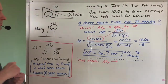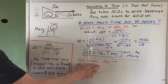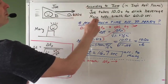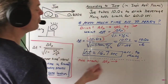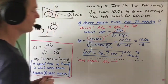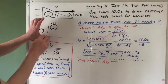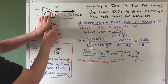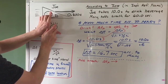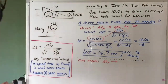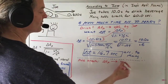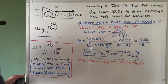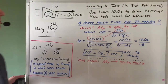Now let's do the other one — the time according to Mary that Mary holds her breath. We know that according to Joe, Mary holds her breath for 60 seconds. The question is: who — Mary or Joe — observes the proper time interval for the holding-the-breath process? Imagine from Mary's perspective: Mary's right here, she starts holding her breath, she ends holding her breath — that all happens at the same location according to Mary. So delta T sub P is according to Mary. But we're not given that; we're given the other time.